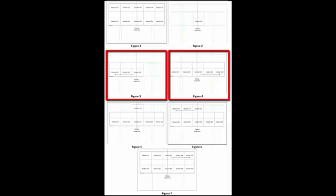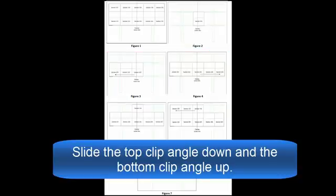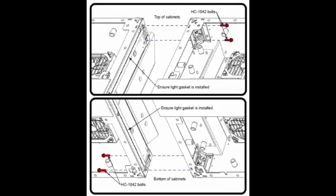The next display section will be hung to the left and right of the center display. Follow the configuration drawing sequence. Before flying the rest of the sections on the row, loosen the top and bottom clip angles. Slide the top down and the bottom up. Use precision blocks in the corners of the cabinets to align the cabinets together.